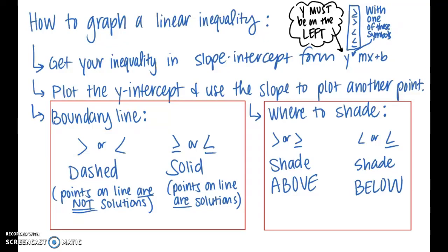Next, figure out whether you should have a dashed or solid line. You will have a dashed line if you have the symbol greater than or less than, because the points on the line are not solutions. If you have greater than or equal to or less than or equal to, the points on the boundary line are solutions, so we include them with a solid line.